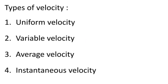Coming to the types of velocity, there are four types: uniform velocity, variable velocity, average velocity, and instantaneous velocity. We will see briefly about each type of velocity and the differences between them.